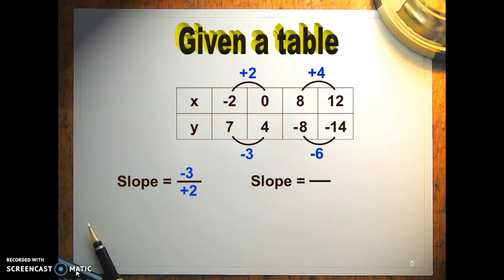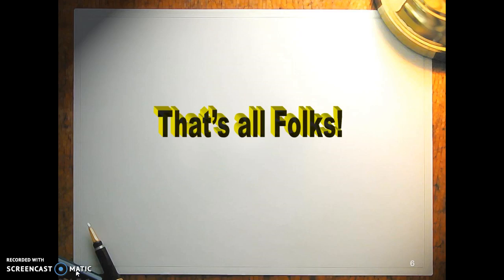Here, between the 8 and 12, the y change is negative 6, and the x change is positive 4, which reduces to negative 3 over 2. So, that's how you do it all. Hopefully, you're going to be comfortable doing this in all of the future questions. We'll see you next time.